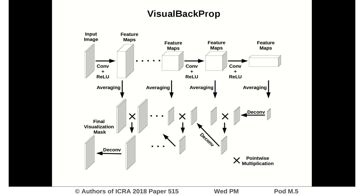Our method combines feature maps from deep convolutional layers that contain mostly relevant information but are low resolution, with the feature maps of the shallow layers that have higher resolution but also contain more irrelevant information. This is done by backpropagating the information about the regions of relevance while simultaneously increasing the resolution. The backpropagation is value-based — we call this approach Visual Backprop to emphasize that we backpropagate values, or in other words images, instead of gradients.